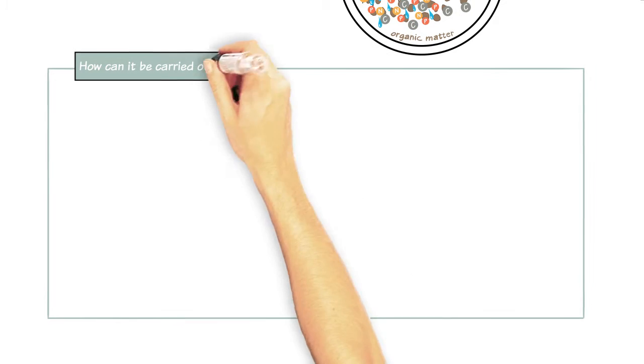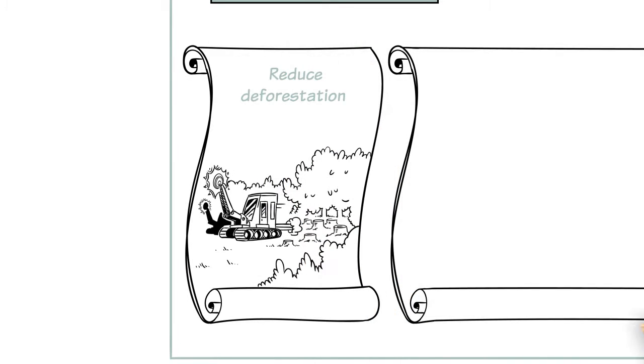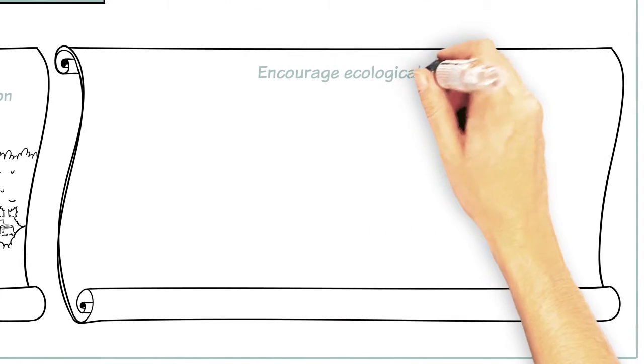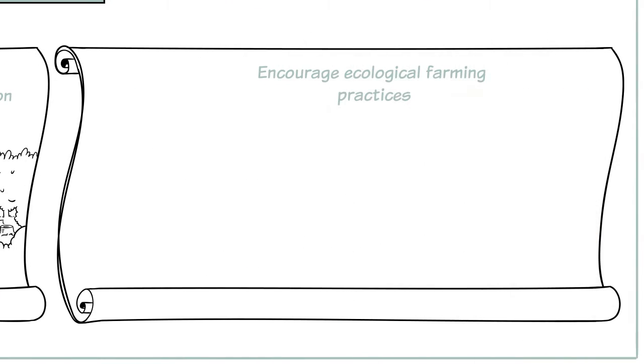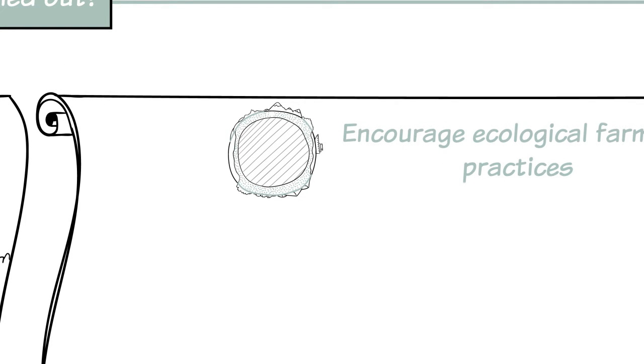How can it be carried out? Policy measures must be established to reduce deforestation and encourage ecological farming practices that boost the amount of organic matter in soils and meet the 4 parts per thousand every year objective.